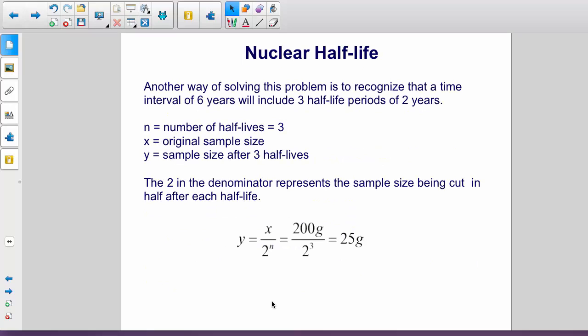Here's another way of solving this problem. What we need to recognize is that in an interval of six years, we have three half-life periods of two years. So, we have three half-lives, and we're going to use symbols x for the original sample size, and y for the final sample size. The two in the denominator in this expression represents the sample being cut in half after each half-life.